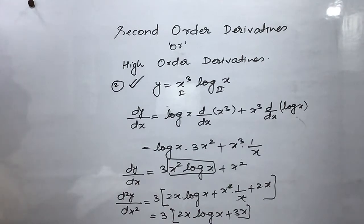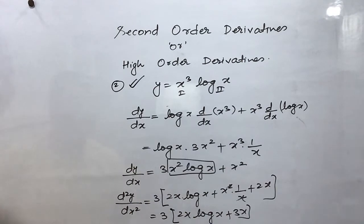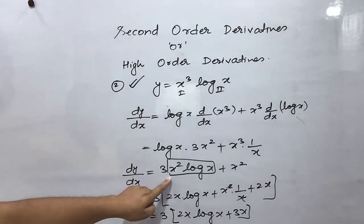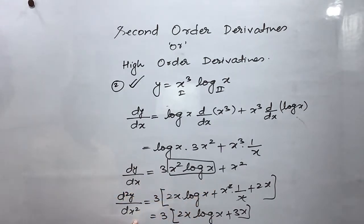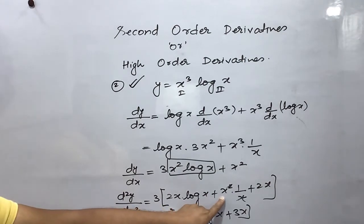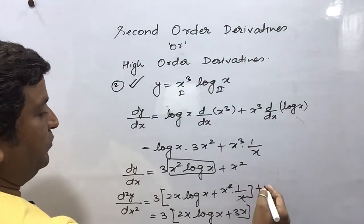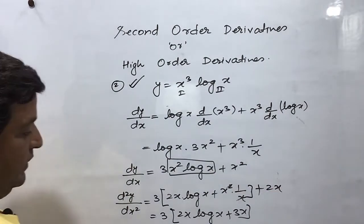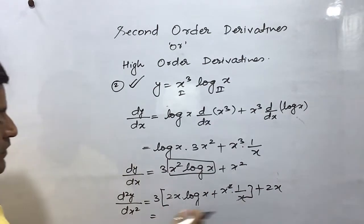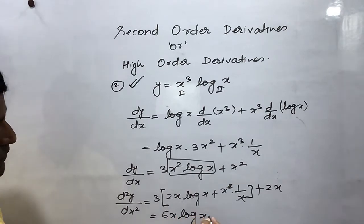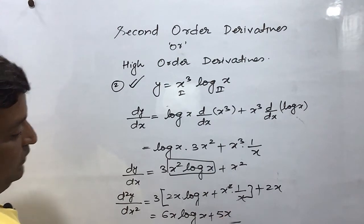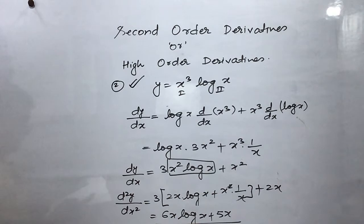So the second-order derivative of y = x³ log x has been found. Let me recheck: first differentiation gave 3x² log x + x². Differentiating again: 3[2x log x + x²·(1/x)] + 2x = 3[2x log x + x] + 2x = 6x log x + 3x + 2x = 6x log x + 5x. This is the answer.